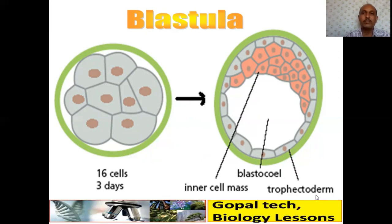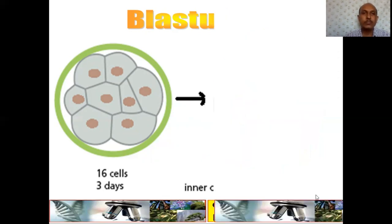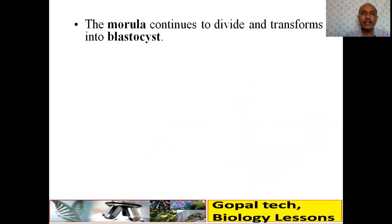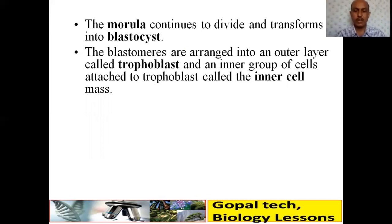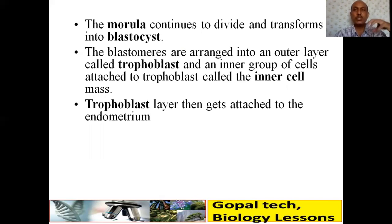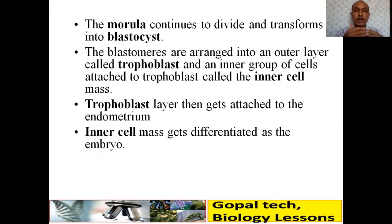This diagram is very important — you must draw it. The blastula has an inner cell mass, a blastocoel cavity, and a trophectoderm as the outermost layer. The morula continues to divide and transform into a blastocyst. The blastomeres arrange into an outer layer called the trophoblast (trophectoderm) and an inner group of cells attached to the trophoblast called the inner cell mass. The trophoblast layer then gets attached to the endometrium, and the inner cell mass differentiates into the embryo; the remaining cells are called stem cells.